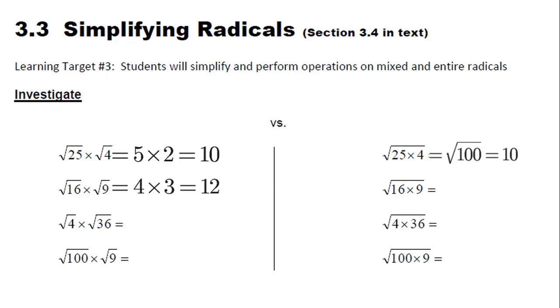Square root of 16 is 4 times the square root of 9 is 3. Square root of 16 times 9, which is 144, is 12. √4 times 6, then multiply 4 by 36, we get 144 again, so it's 12.